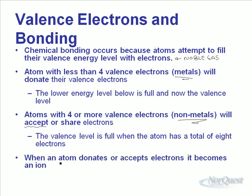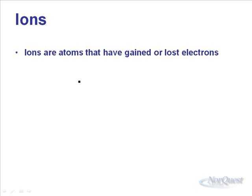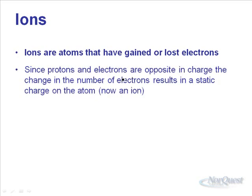When an atom donates or accepts electrons, it becomes an ion. What we're doing is changing the number of electrons, but the number of protons stays the same. This means our element is going to have a charge — we're losing or gaining negative things, but the number of positive things stays the same, so our atom becomes charged. Ions are atoms that have gained or lost electrons.